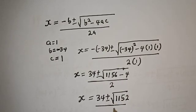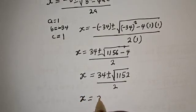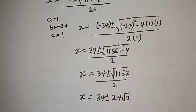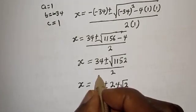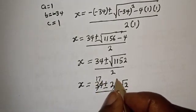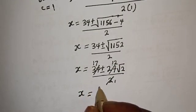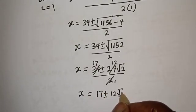So s equals 34 plus or minus square root of 1152 over 2. The square root of 1152 simplifies to 24 root 2. Dividing through: 34 over 2 is 17, and 24 over 2 is 12. So s equals 17 plus or minus 12 root 2.